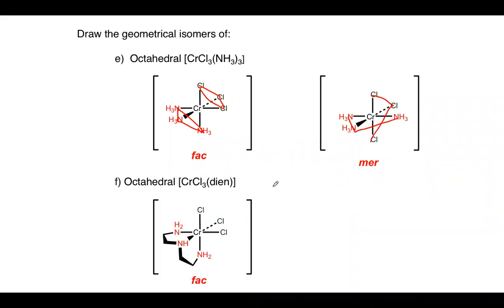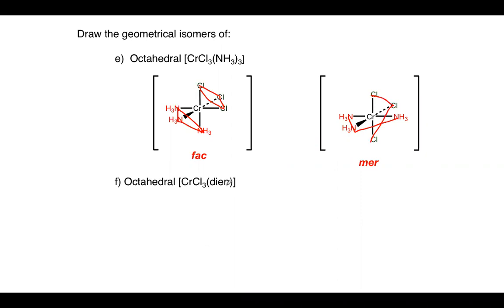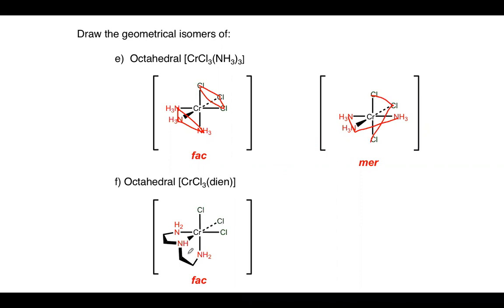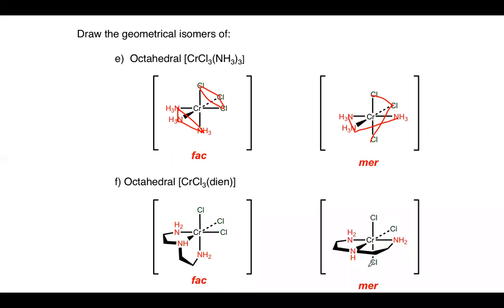For an octahedral complex with a tridentate ligand such as diethylenetriamine, it's technically still capable of forming MA₃B₃-type isomers because the three binding sites are all from the same molecule. If we treat A and B as binding sites rather than separate molecules, the same principles apply — so we get fac and mer isomers for this complex as well.